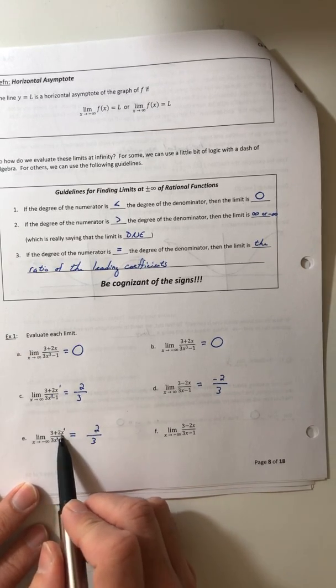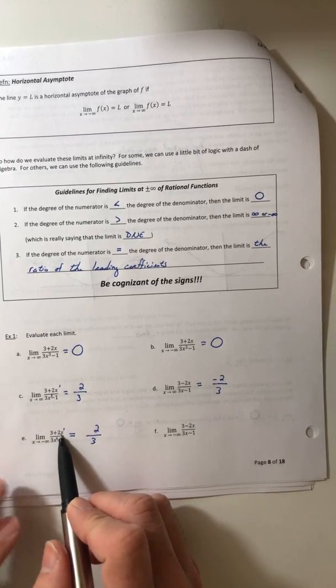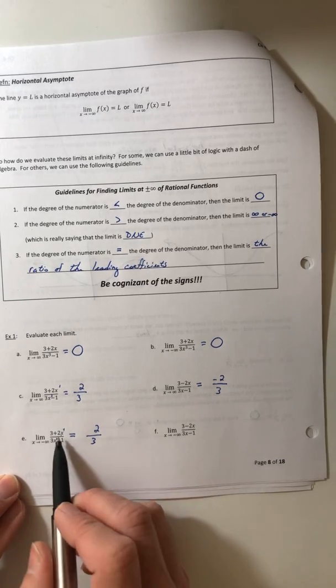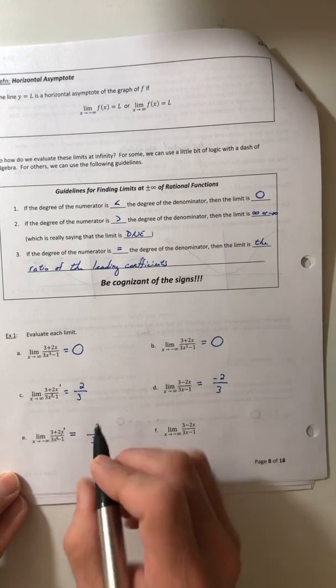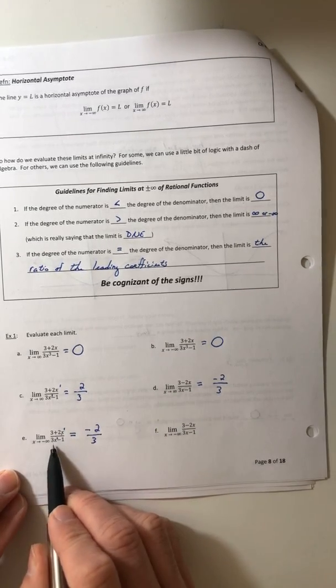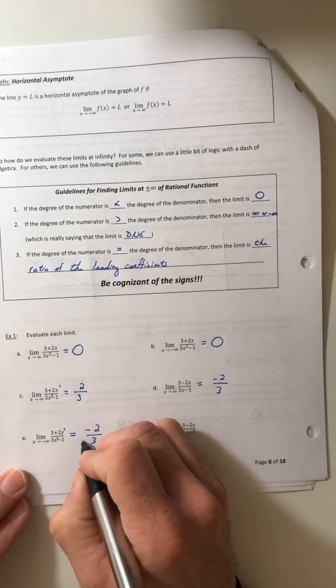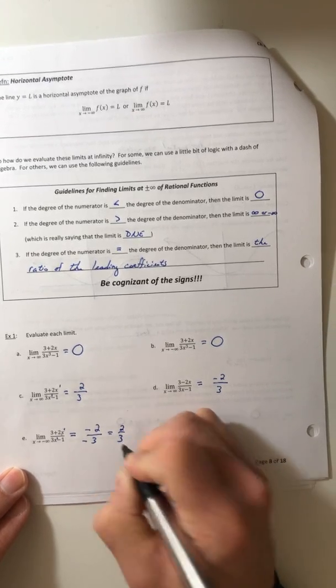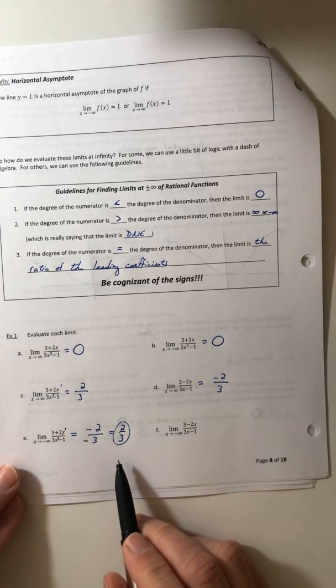So if you plugged in like bigger and bigger and bigger negative numbers for x, that's going to make your numerator negative. Like if you plugged in negative 10,000 for x, the top is going to be a negative number. Well, if you did the same thing in the denominator, plugged in like that negative 10,000, the denominator is also going to be negative. So it still comes out to equal two-thirds.